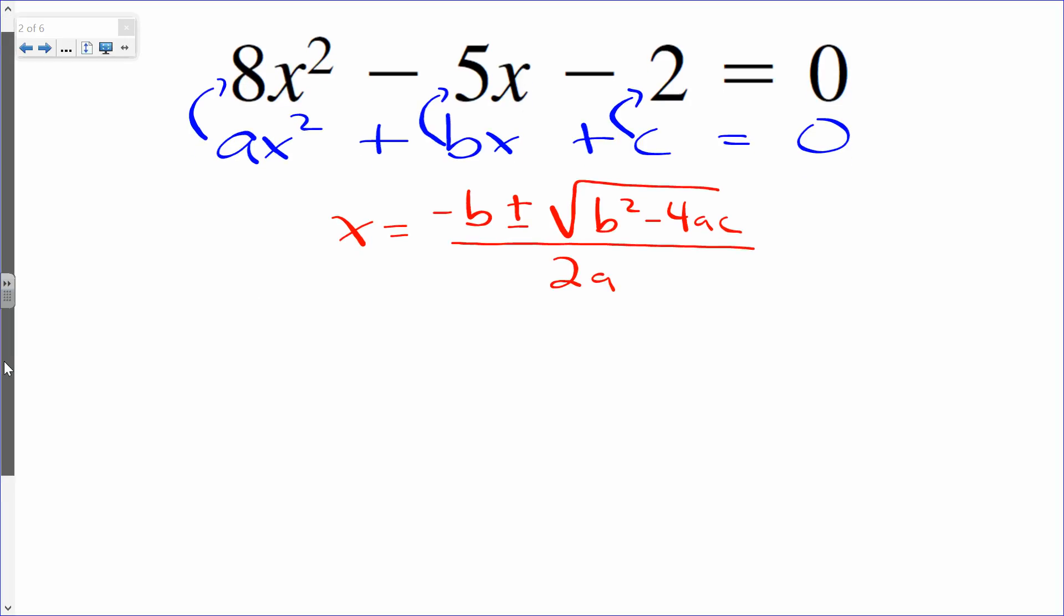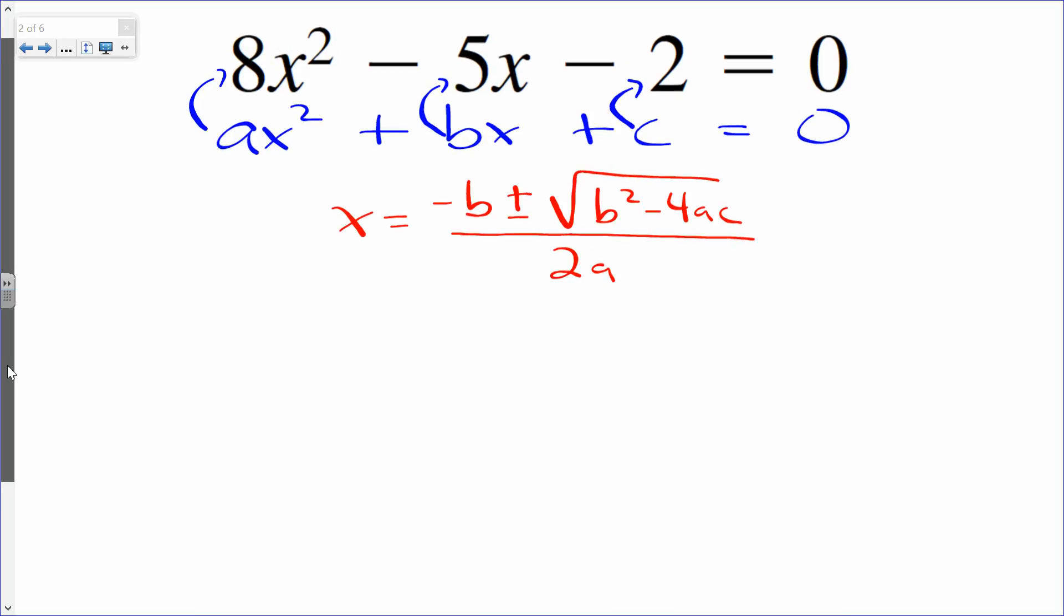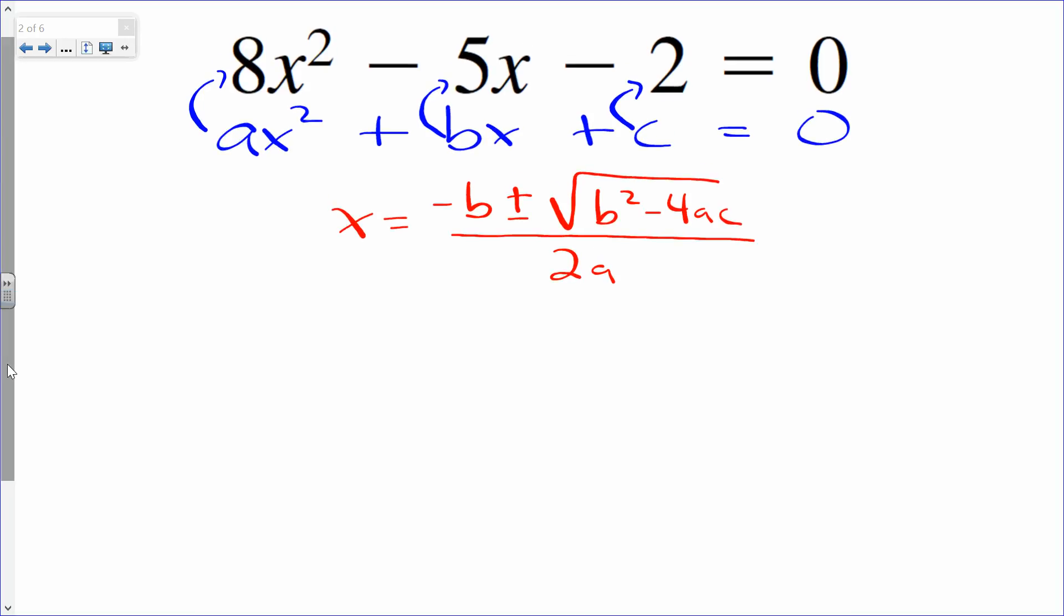And now the rest is just a matter of plugging and chugging. So let's go ahead and start plugging and chugging. x is negative b. In this case, notice how b is already negative. It's a negative 5. So this means I'm going to have a double negative. This is really negative 1. Notice the negative in front of b is really a negative 1 coefficient. So it's going to be a negative 1 times a negative 5 plus and minus.